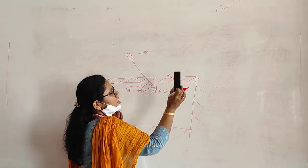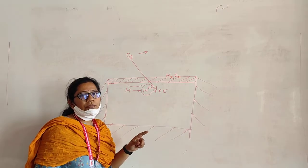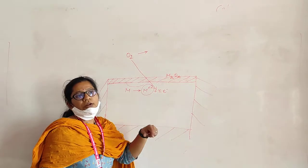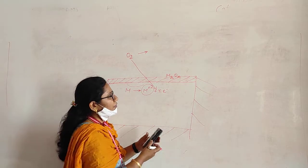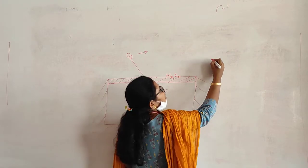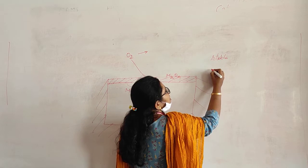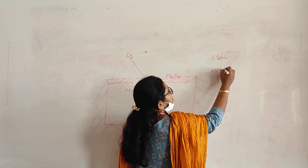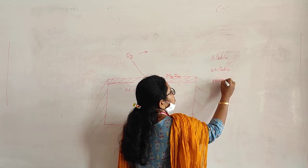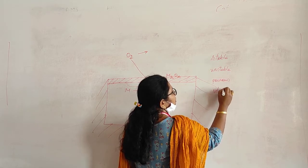Once this oxide layer is formed, it can be protective or non-protective. We have four types of oxide layers being formed: stable oxide layer, unstable oxide layer, porous oxide layer, and volatile oxide layer.